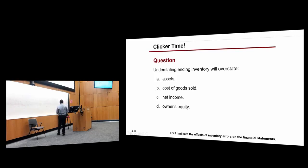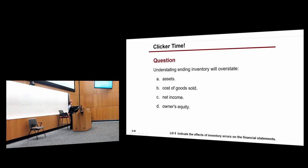Understating ending inventory will overstate assets, cost of goods sold, net income, and owners' equity. I basically showed you the answer. I'll give you a pass because it's the beginning of the lecture.